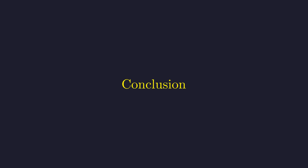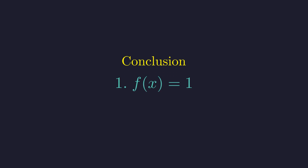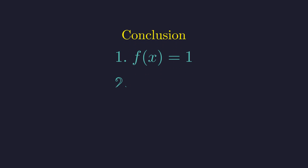Let's summarize our findings. After exploring every logical path, we've discovered that exactly three functions satisfy both original conditions: the constant function f(x) = 1, the constant function f(x) = 2, and the identity function f(x) = x.